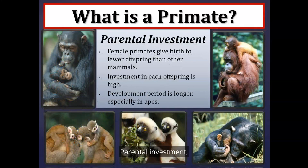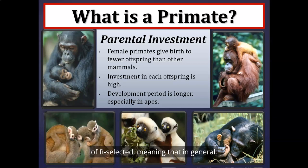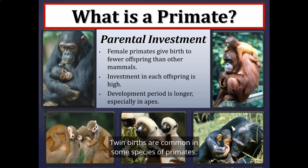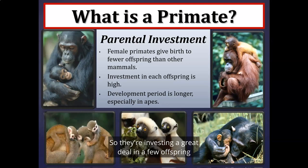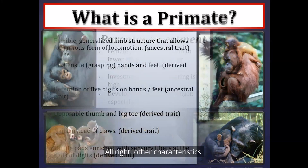Parental investment: primates in comparison to other mammals invest a great deal in a few offspring. They are K-selected instead of R-selected, meaning they tend to have single births. Twin births are common in some species, but most primate species have single births and space them out at least two to three years. Investment in each offspring is high, and the development period, especially for the apes, is much longer — they are very dependent upon their parents for survival.